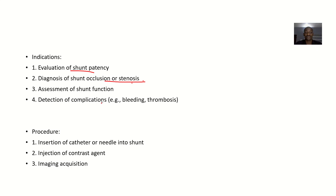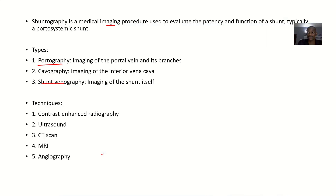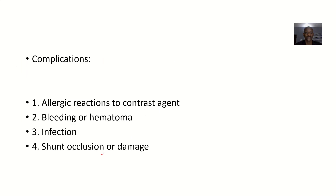For the procedure, you insert a catheter or needle into the shunt, then inject a contrast agent to make the shunt very visible on imaging. You then perform the imaging study to make the anatomy much more clear and evaluate the shunt.